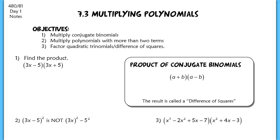This lesson is for section 7.3. We're going to be multiplying polynomials — specifically, multiplying conjugate binomials and polynomials with more than two terms. On the back side of our notes, we are going to be factoring quadratic trinomials and difference of squares, which is really just a review of stuff that we've seen all year.